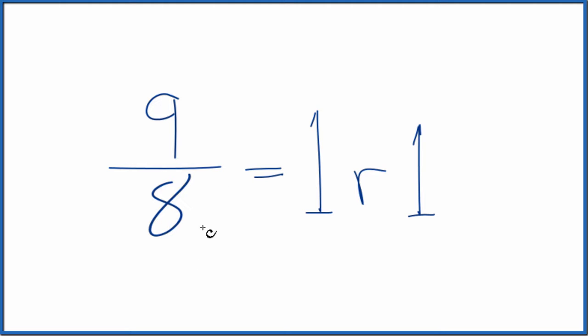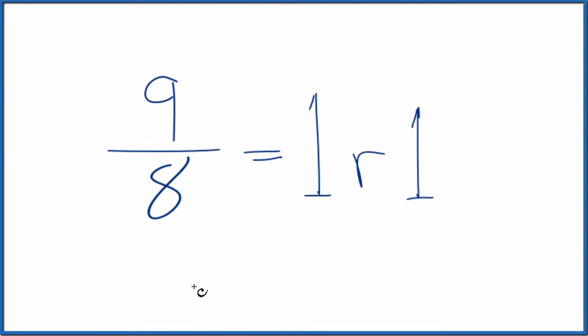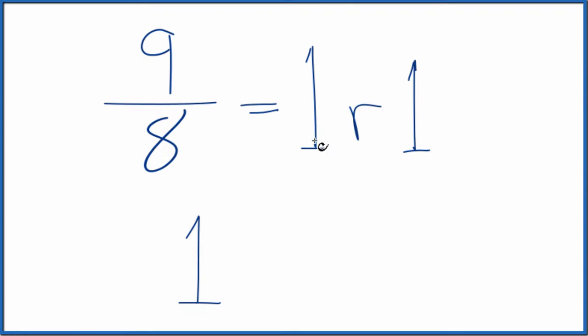Now we can write 9 eighths as a mixed number. So we take the 1 here, that's our whole number, and we take the remainder, and we put the denominator here from our original fraction underneath. So 9 eighths, the fraction, is equal to 1 and 1 eighth.